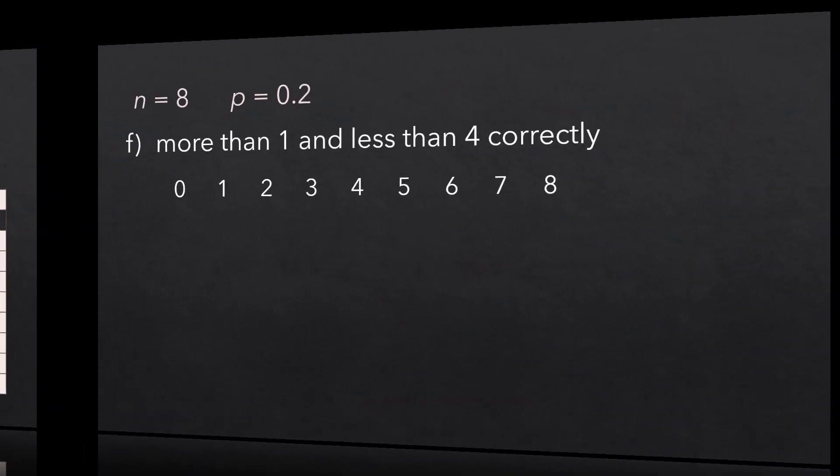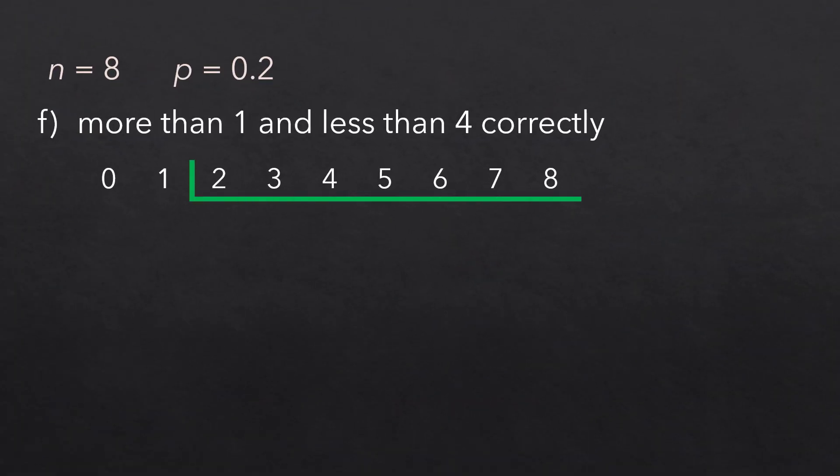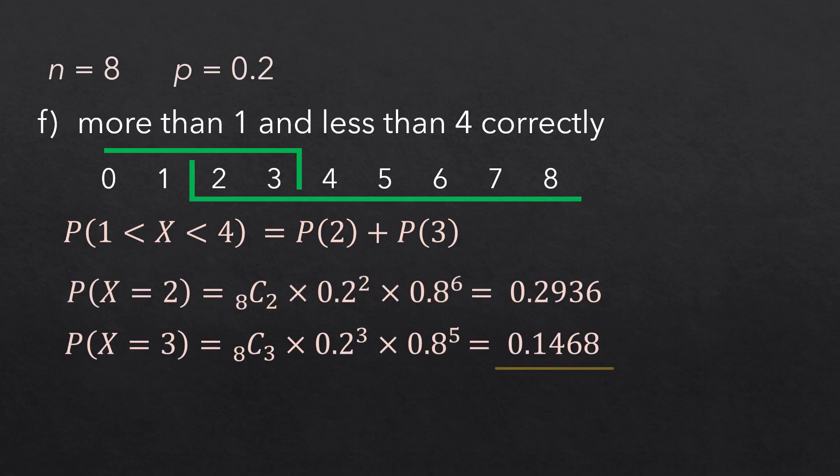For more than 1 and less than 4 successes, the only x values captured here are 2 and 3, since the word AND here means that we must find the intersection for both conditions. We can write it as p of 1 less than x less than 4. And using formula, the sum of the 2 probabilities is 0.4404.